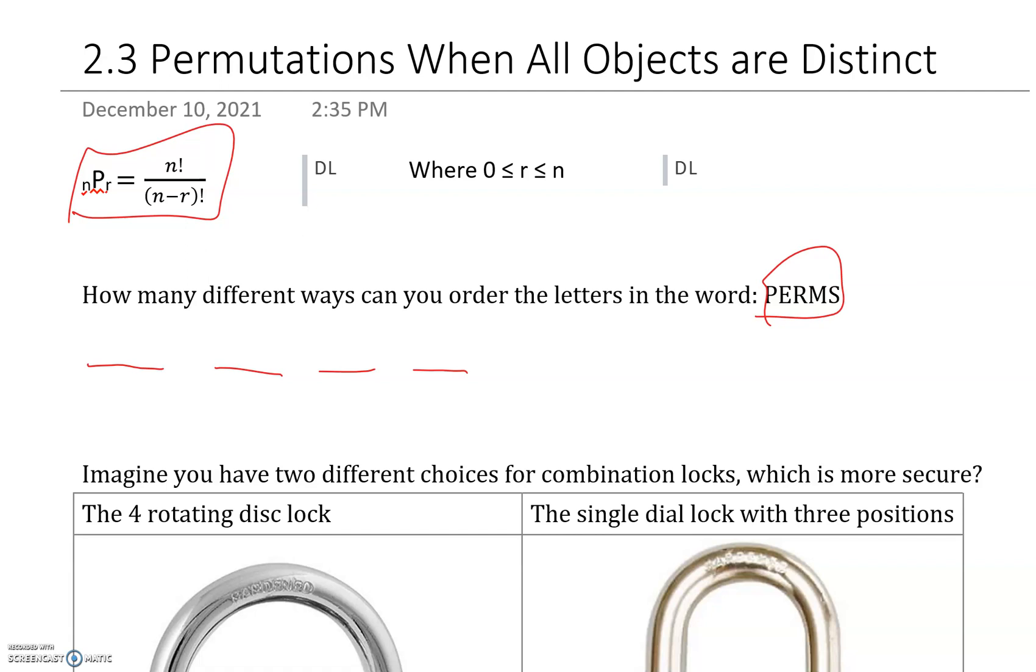There are five letters. So we can go 5, 4, 3, 2, 1. Beautiful. So in this version, it's really easy. We just multiply all of these out.